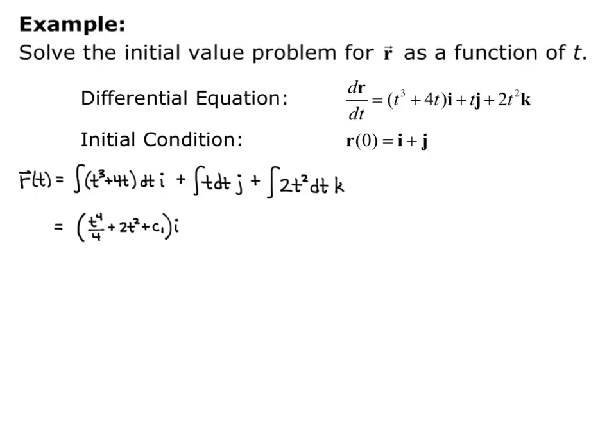The j component — I'll use the power rule as well — gives t squared over 2 plus c sub 2 times j. And the k component is 2/3 t cubed plus c sub 3 times k. So each component gets its own constant.